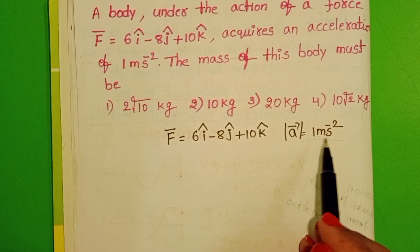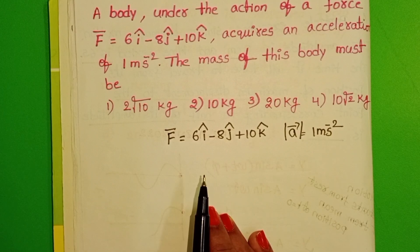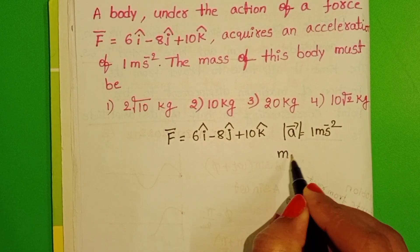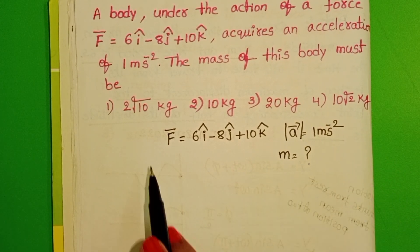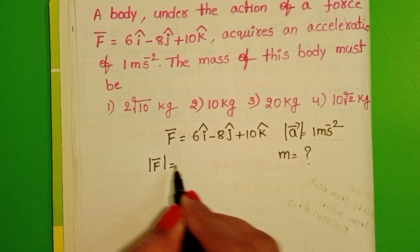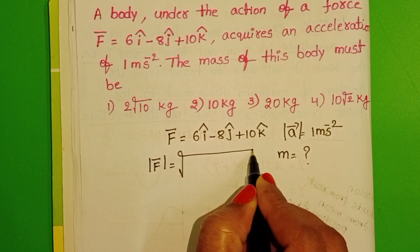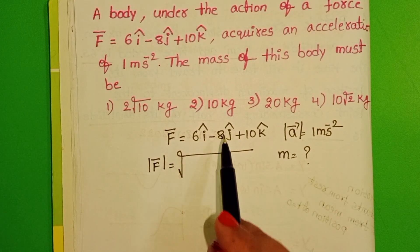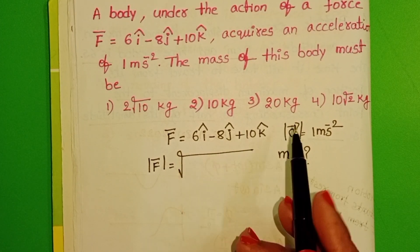Magnitude of acceleration is 1 meter per second square. We have to find out the mass of the body. First, find out the magnitude of the force. Mod F bar equals square root of Fx square plus Fy square plus Fz square.